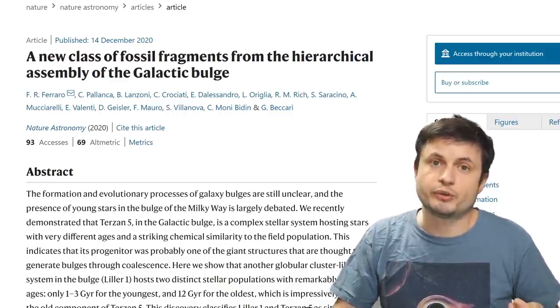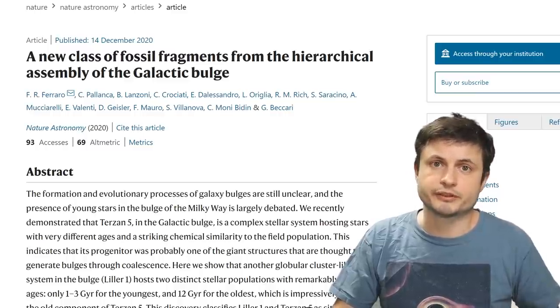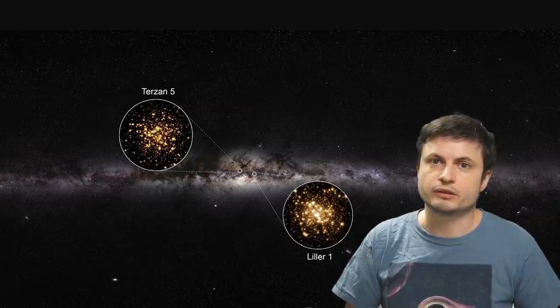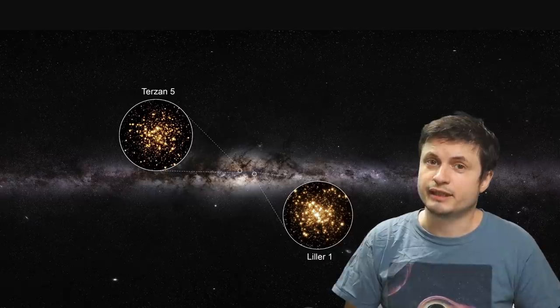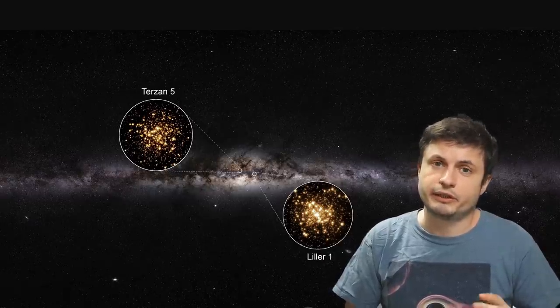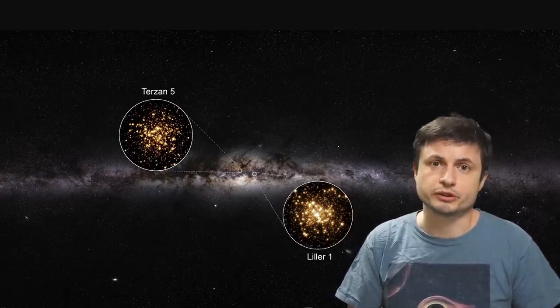They try to analyze using these two specific globular clusters known as Liller 1 and Terzan 5, with Terzan 5 being one of the most famous globular clusters. Now the thing about Liller 1 is that it's actually kind of difficult for us to see. It's located on the other side of the gas cloud that essentially represents the Milky Way galaxy center. And because of this, it's extremely dim.